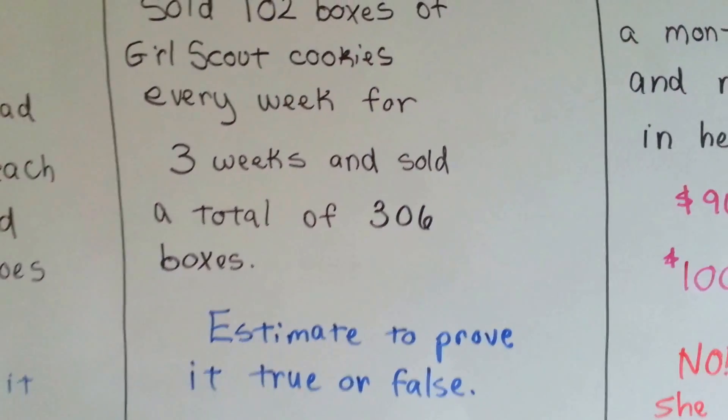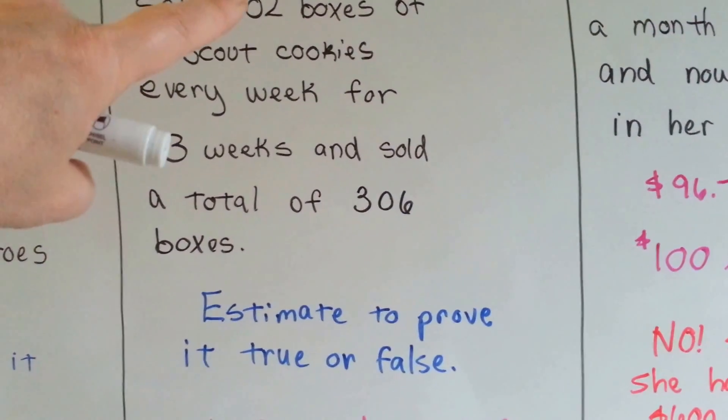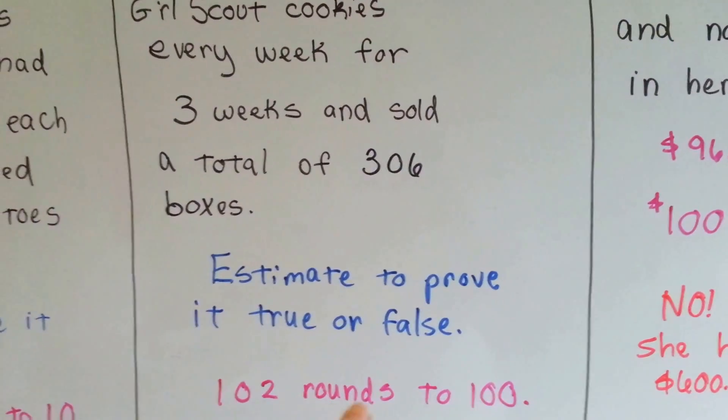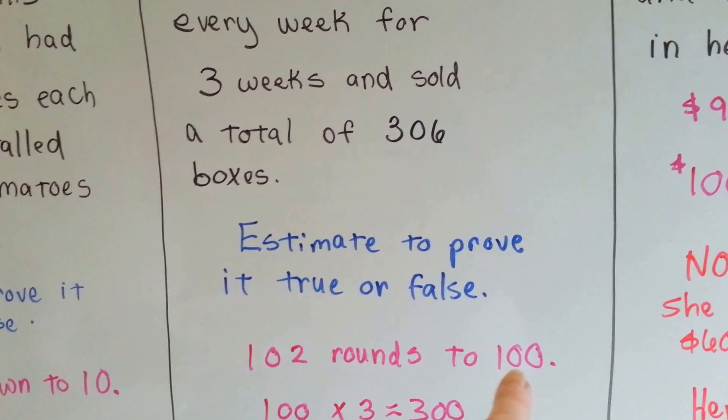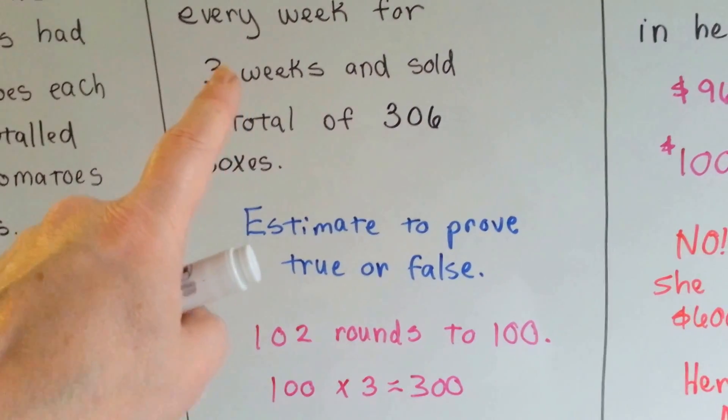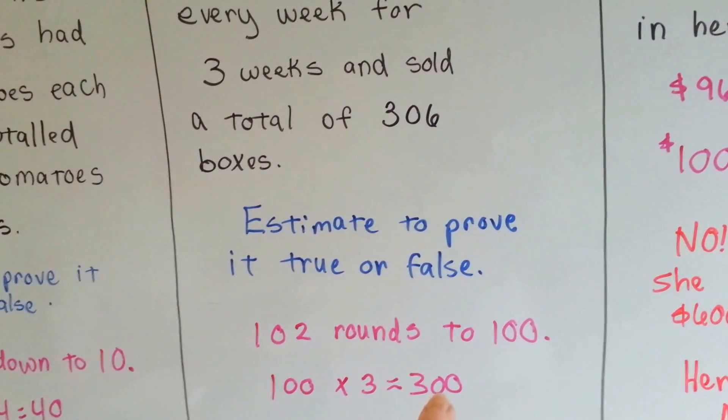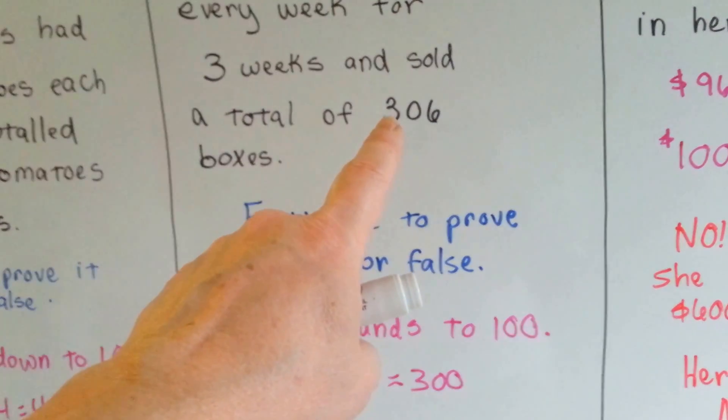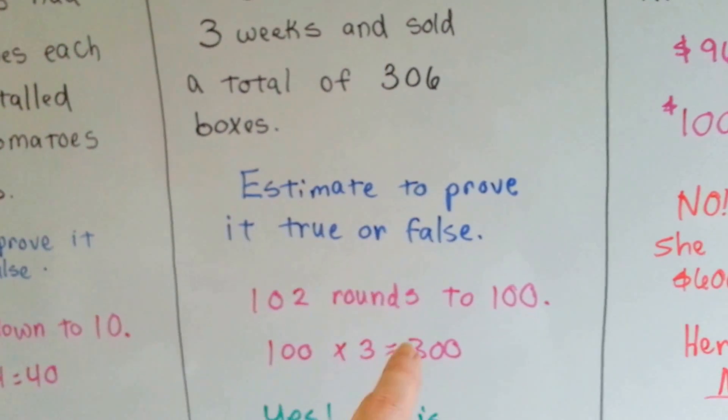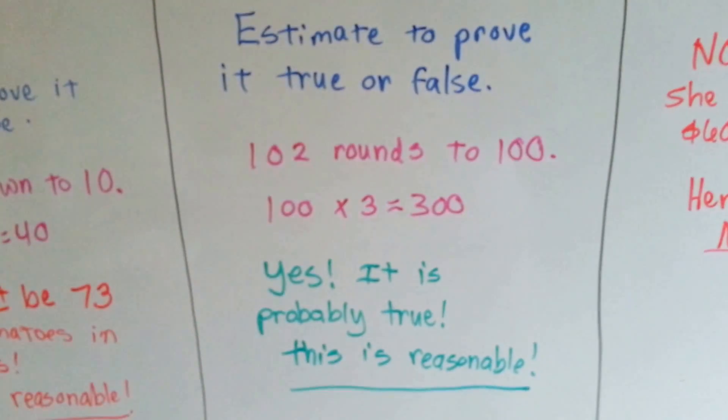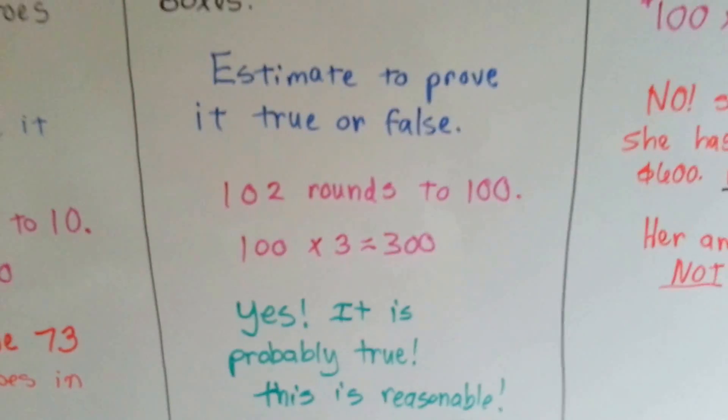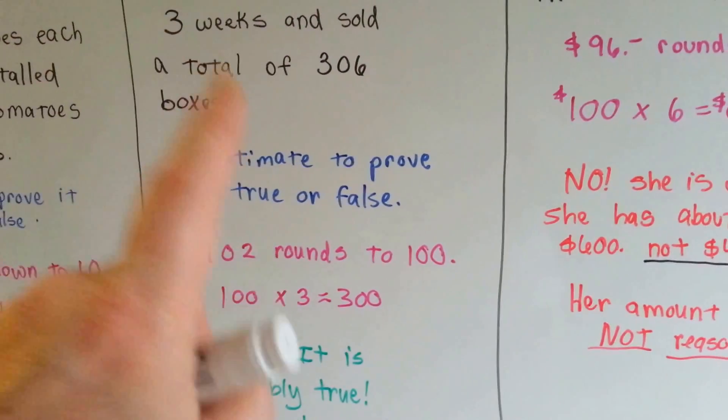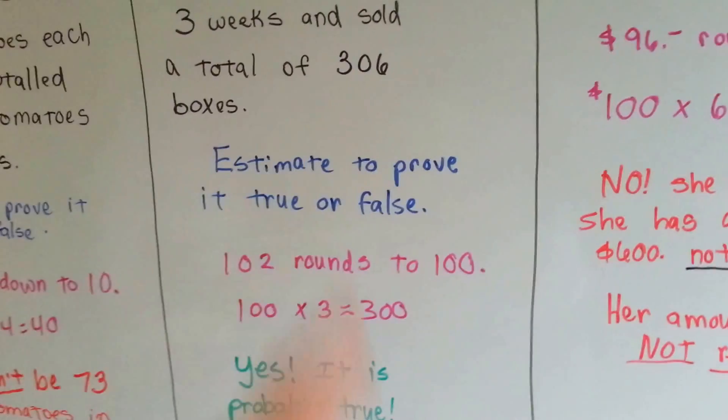Estimate to prove it true or false. Well, 102 rounds to 100. 100 times 3 weeks is 300. She said she sold 306. So is it logical that it's 306? Yes, it's probably true. This is reasonable. So you don't need to do the real math. You just need to estimate to see if it's close to true, if it's believable.